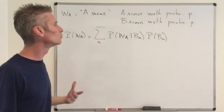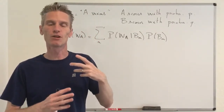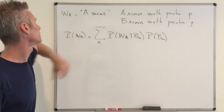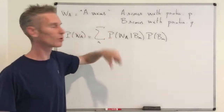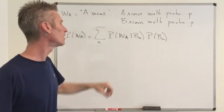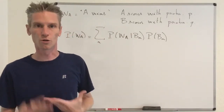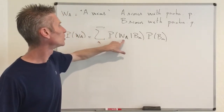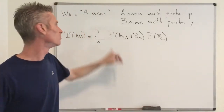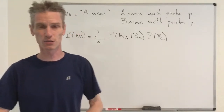Something natural would be to condition on who scores the first point, as we did for the game of craps. However, if A scores the first point, the conditional probability that A is the first player two points ahead given that A scores first is not easy to compute. We can only say it should be strictly larger than P(W_A), but it's not clear how to compute this quantity.